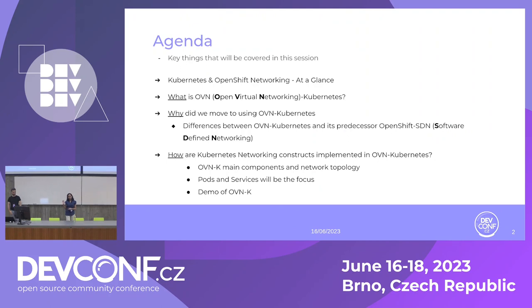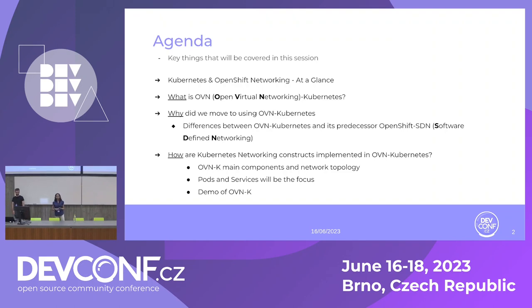This is the brief agenda we'll be covering today. We will first start with the basics of Kubernetes and OpenShift networking. Once we finish that, we'll go over what OVN is and what OVN Kubernetes is, and then why we moved to OVN Kubernetes. We'll also look at the differences from its predecessor, the legacy CNI plugin SDN — Software Defined Networking.